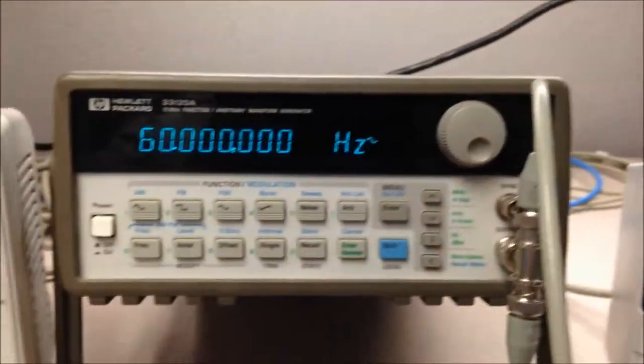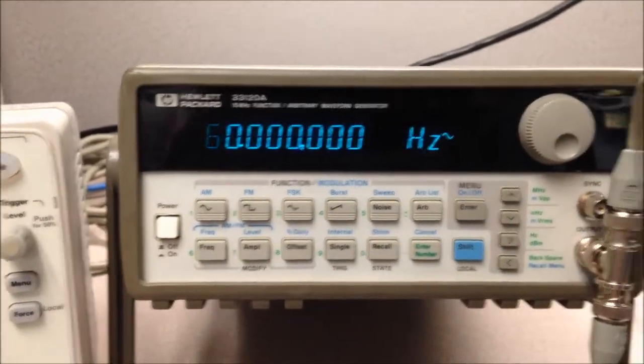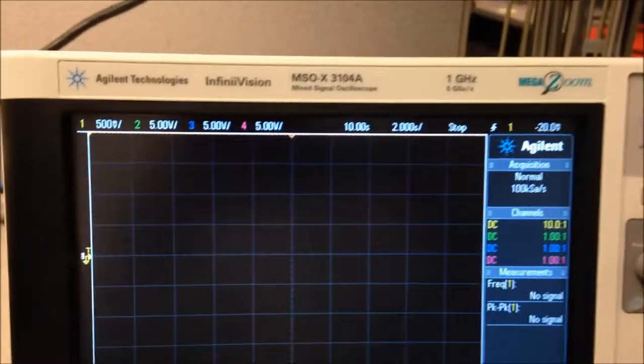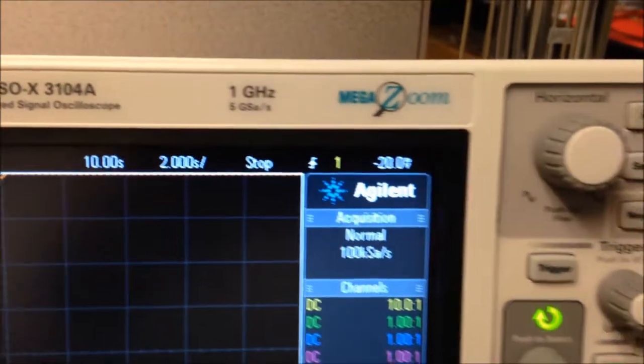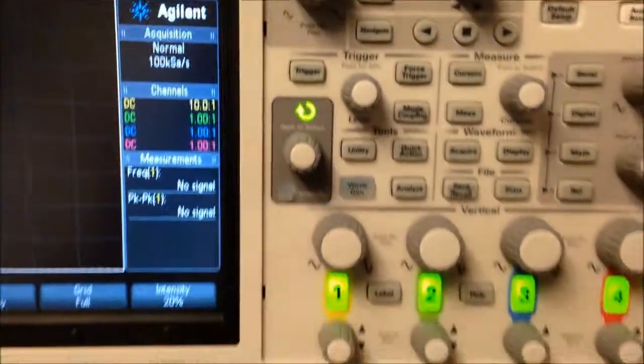And then I have a function generator at 60 Hz, and I have the 3000 scope, also at 2 seconds per division, and all the channels on.